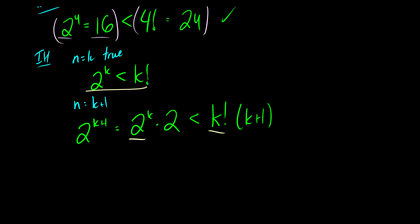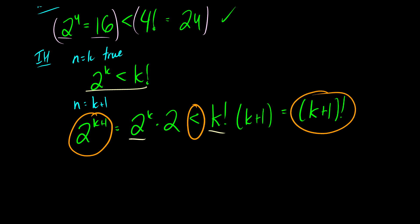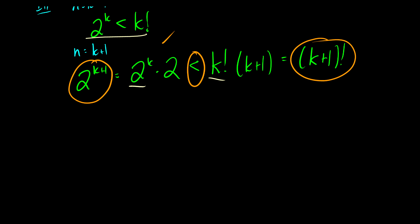Why is 2 less than k plus 1? Well, n is equal to k plus 1, and the minimum value for n is greater than or equal to 4. So k plus 1 is not going to be less than 4, and 2 is definitely less than 4. So our 2 is going to be less than k plus 1 no matter what. And what is k factorial times k plus 1? That's the same thing as k plus 1 factorial. So we've proven that 2 to the k plus 1 is less than k plus 1 factorial, completing our inductive step. Therefore 2 to the n is less than n factorial for all n greater than or equal to 4, where n is in the positive integers.